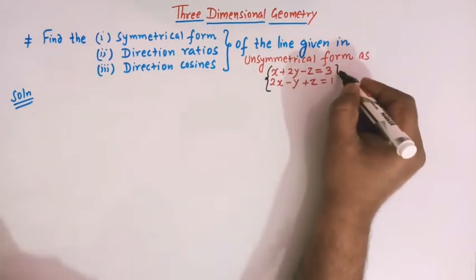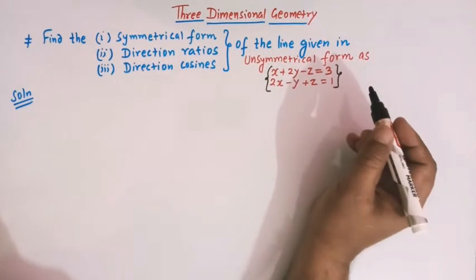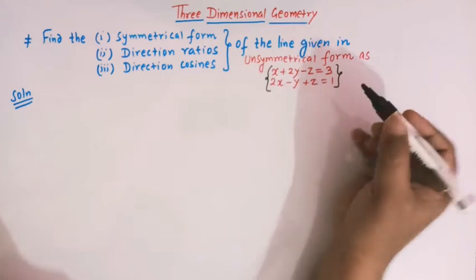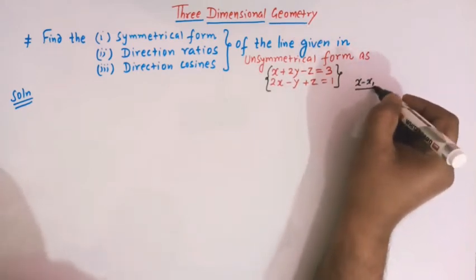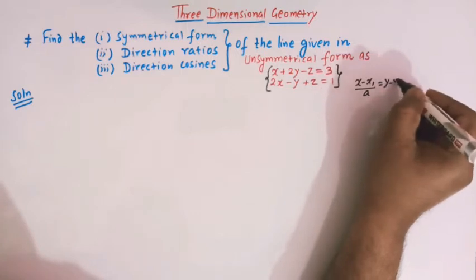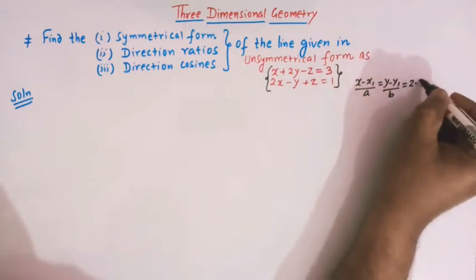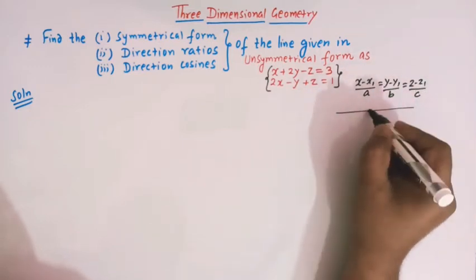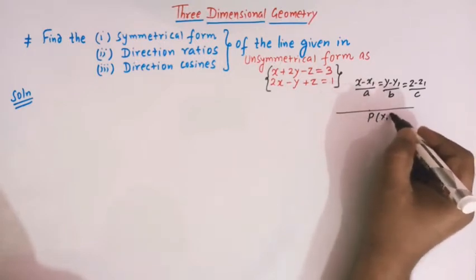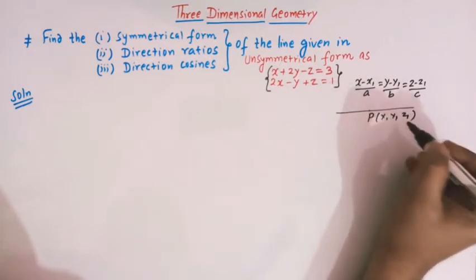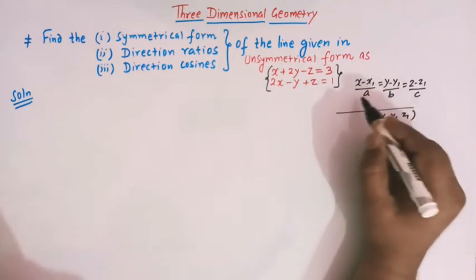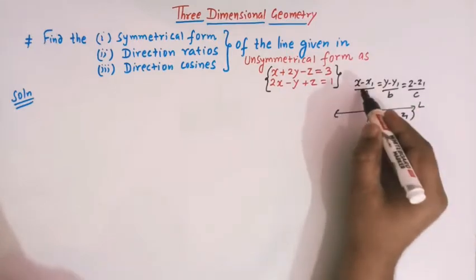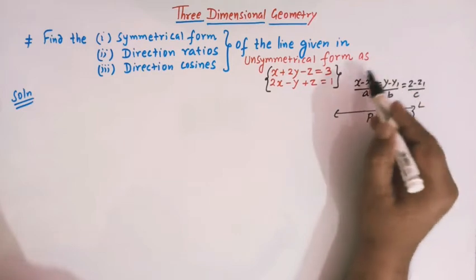These two equations together represent a line. The usual form of a line is x minus x1 over a, y minus y1 over b, and z minus z1 over c, where x1, y1, z1 is the point through which the line passes and a, b, c are the direction ratios. This is known as the symmetrical form.